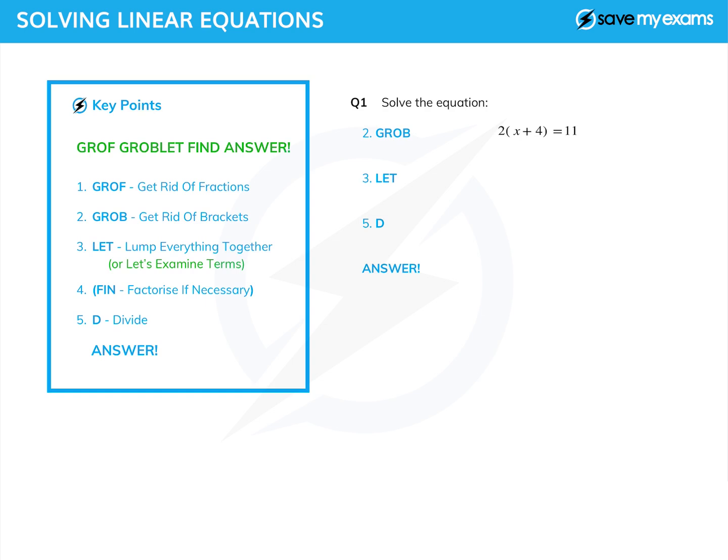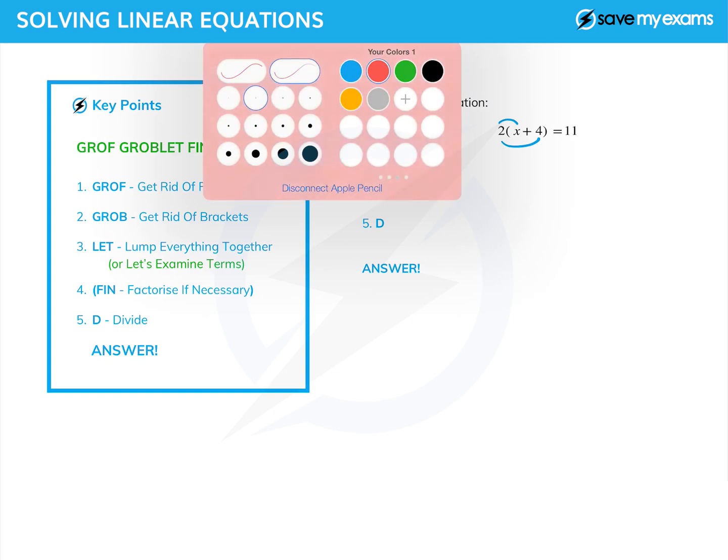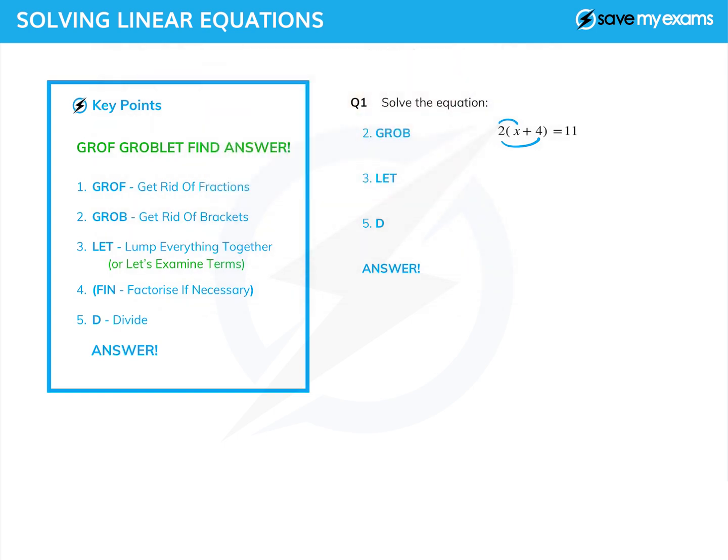The first thing we notice about this equation in question one is that there are some brackets, so we get rid of the brackets. How do we do that? Well it's a one bracket with something outside it, so if you've seen the tutorial on this you'll know that I always link the thing outside to the terms inside. So the 2 gets linked with the x and then with the 4, and then we just do the multiplications. So 2 times x is 2x and 2 times 4, that's the bottom link there, is 8.